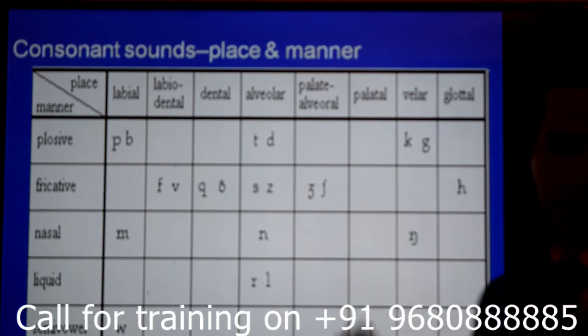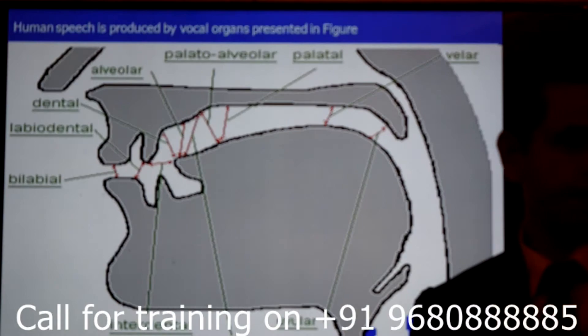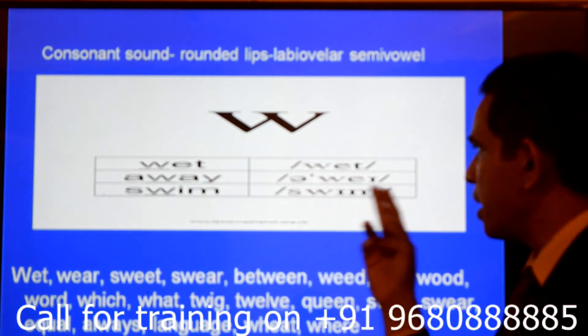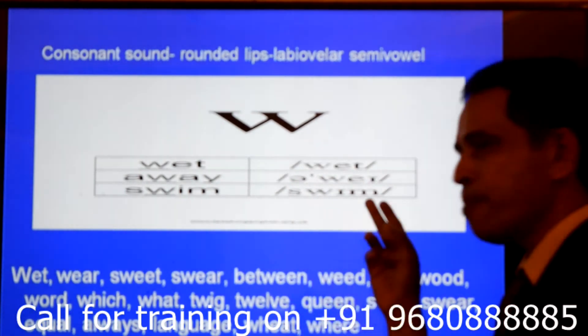So this is a consonant table. Wet. As in wet. Away. Away. Away. Swim. Swim.